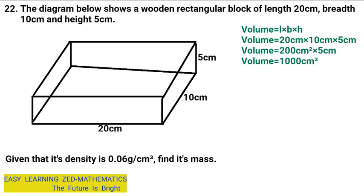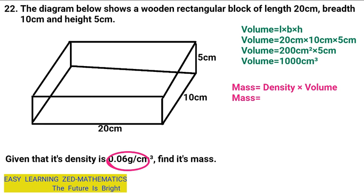Now we have found the volume, and we also have the density. We can now calculate the mass. The formula is: mass equals density multiplied by volume. The density is 0.06 grams per centimeter cubed, which will be multiplied by the volume of 1,000 centimeters cubed.